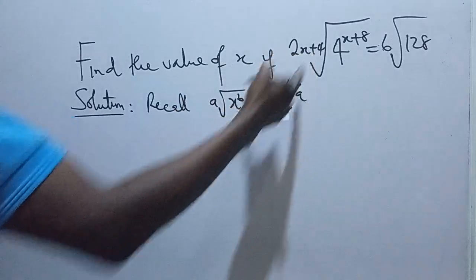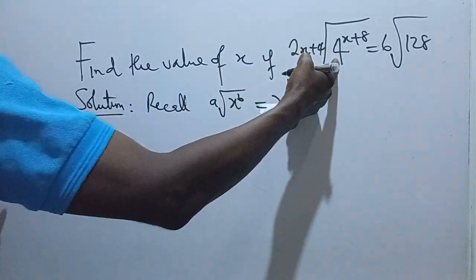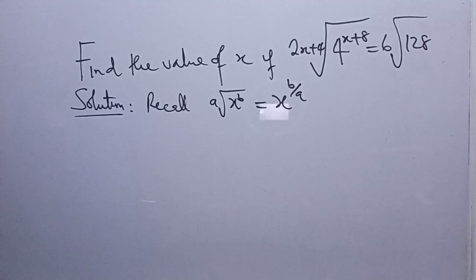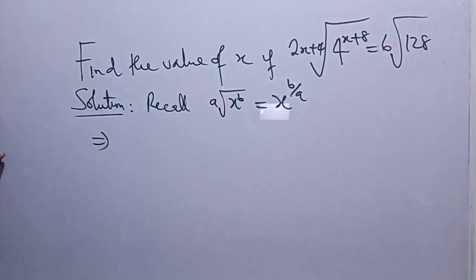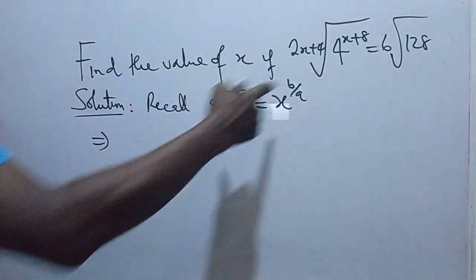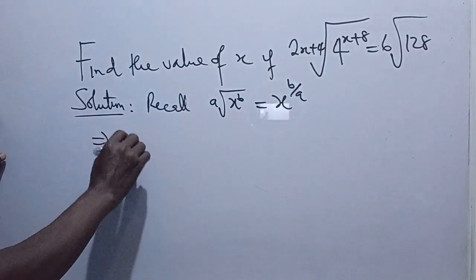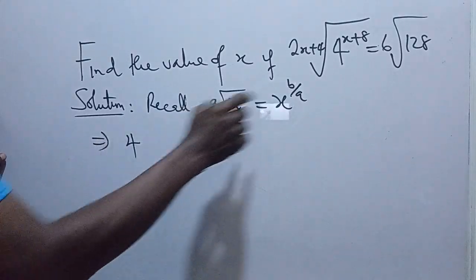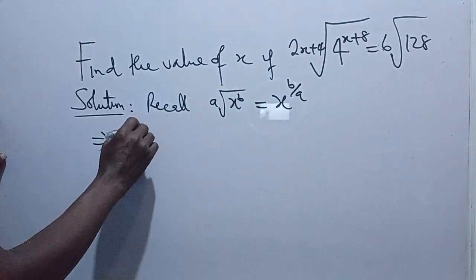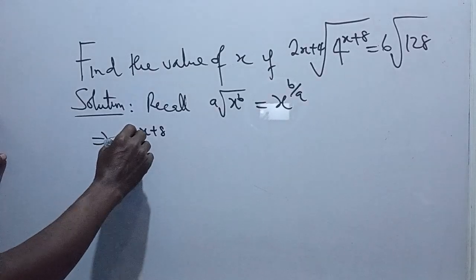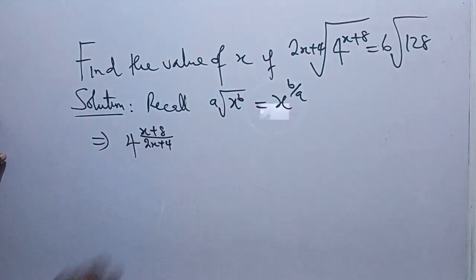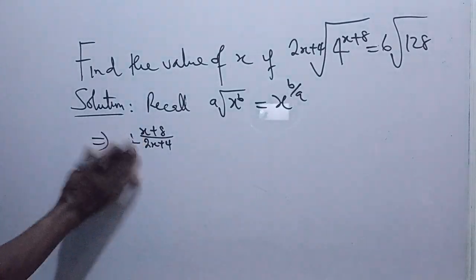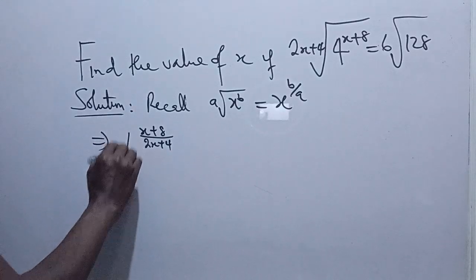So that means a is 2x plus 4, x is 4, and b is x plus 8. So moving on, we have this. Now we write this as our x, like I said, now is 4, raised power x plus 8, all over the one outside, 2x plus 4. I hope that is understood. Let me write it so that you don't think it's 4, but it's 4 raised power.